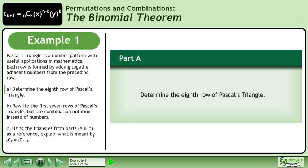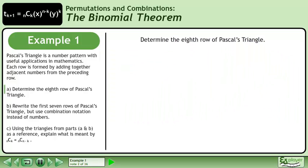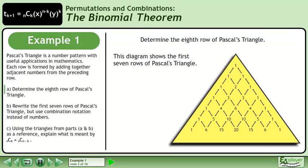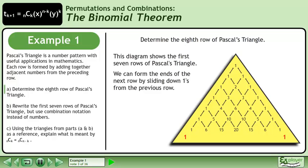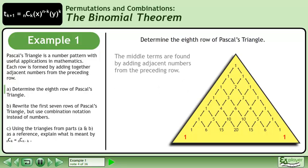In Part A, determine the eighth row of Pascal's Triangle. This diagram shows the first seven rows of Pascal's Triangle. We can form the ends of the next row by sliding down ones from the previous row. The middle terms are found by adding adjacent numbers from the preceding row.